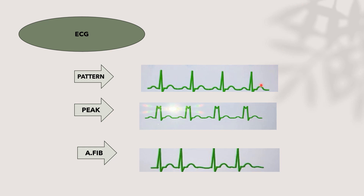The second type is the peak type, similar to the pattern type but used when there is a wide QRS complex, such as in bundle branch block. The third type is atrial fibrillation mode, where the machine analyzes the QRS complex in the same manner as peak mode, but the balloon automatically deflates whenever the R wave is sensed.